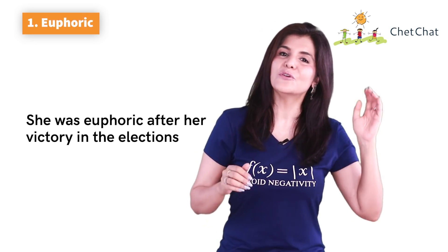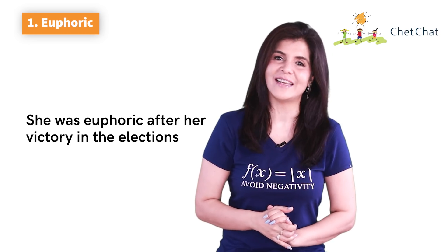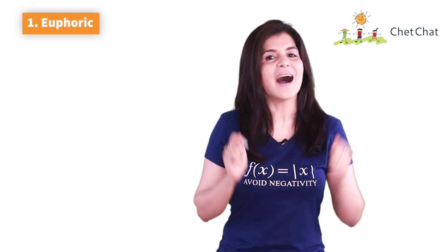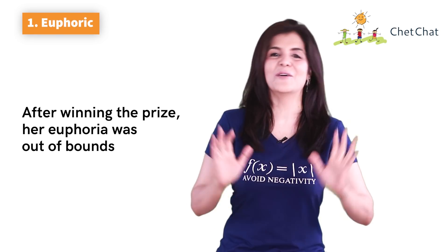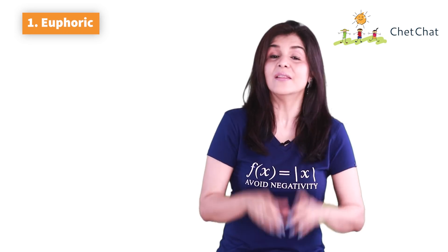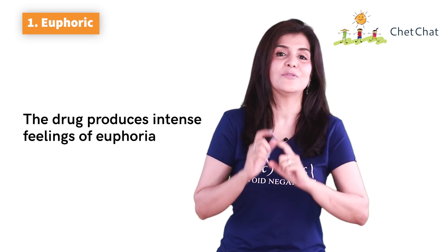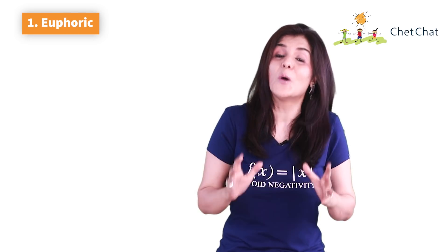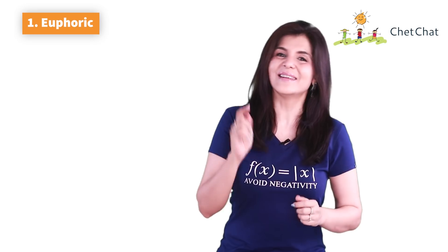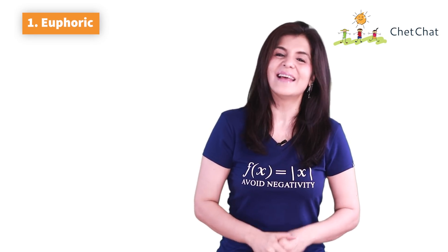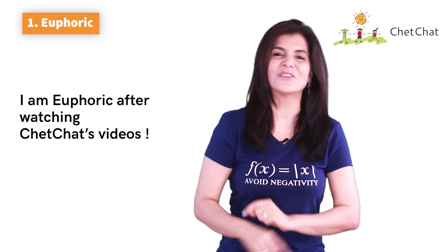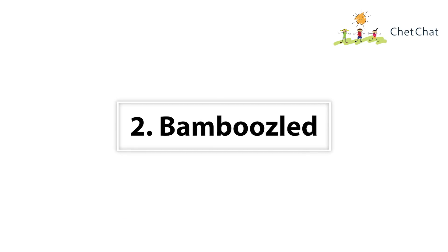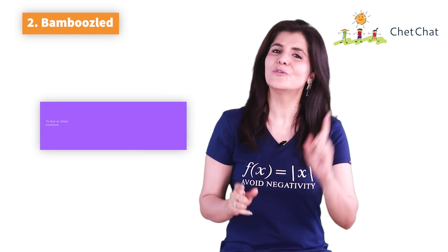Example: 'She was euphoric after her victory in the elections.' If you want to use the noun 'euphoria,' you can say: 'After winning the prize, her euphoria was out of bounds,' or 'The drug produced intense feelings of euphoria.' By the way, euphoria is also used to convey abnormally intense feelings of excitement. So next time you can tell your friends that you're euphoric after watching ChetChat videos!